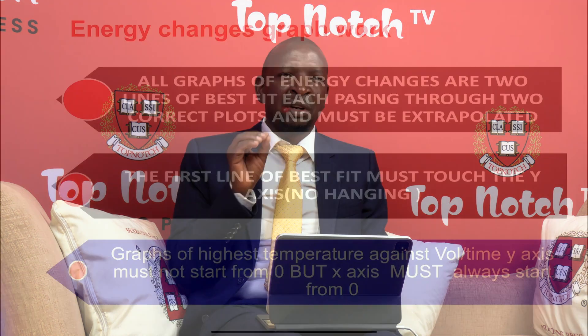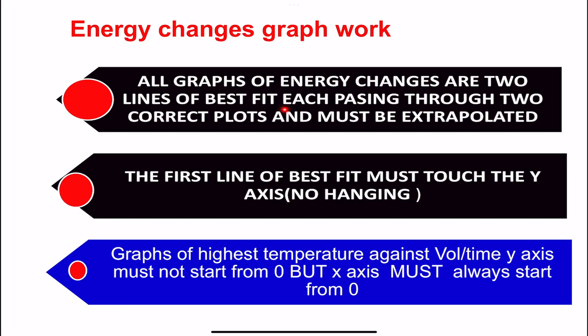I want to remind you of points we looked at in the previous lesson. All graphs of energy changes are two lines of best fit, and each line must pass through two correct plots and must be extrapolated. The first line of best fit must touch the y-axis. There are no angled graphs in energy changes.